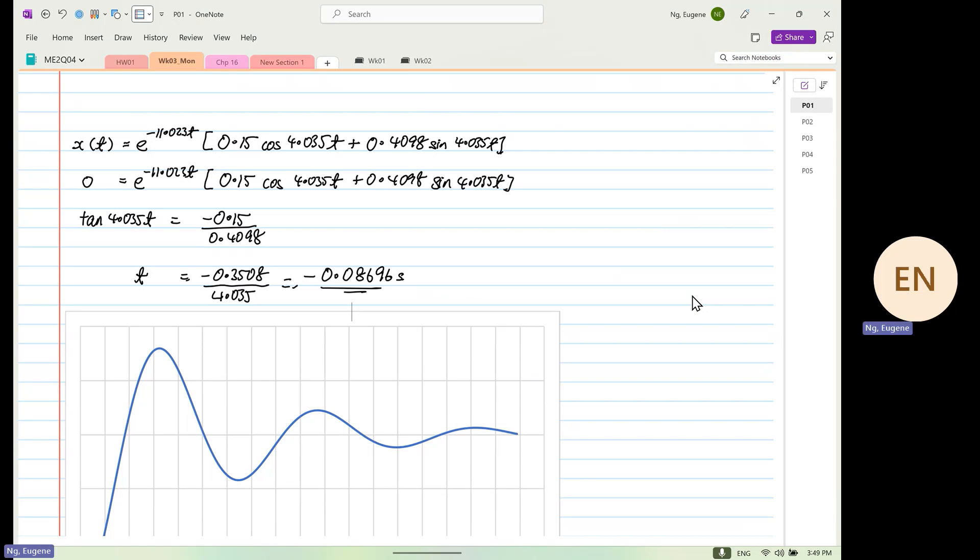So you realize that time cannot actually be what? Negative. Means, if physically negative means what? Before I release the system, it is in a steady state, which is not possible, okay?